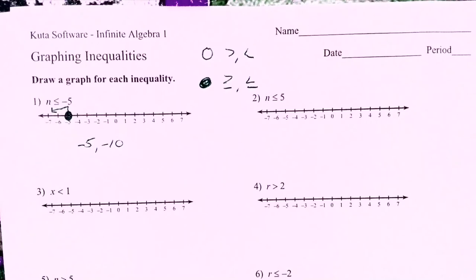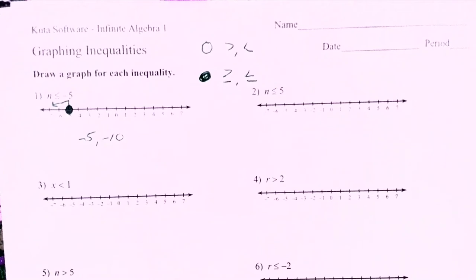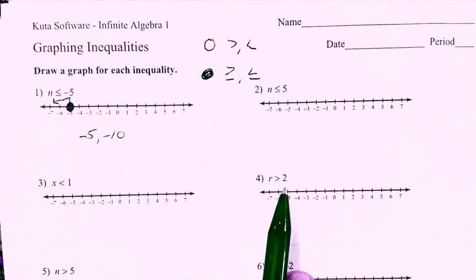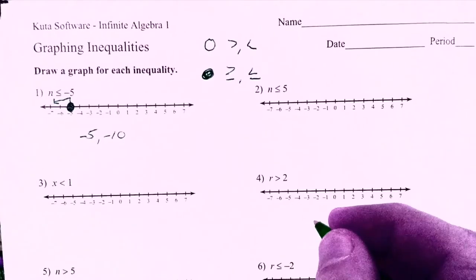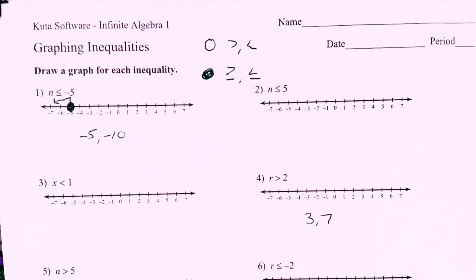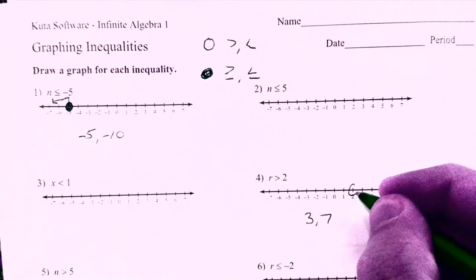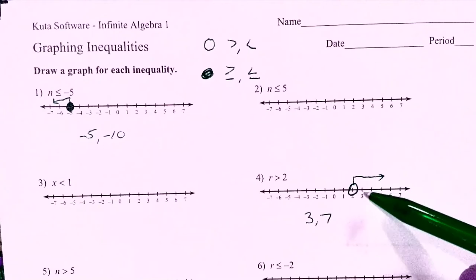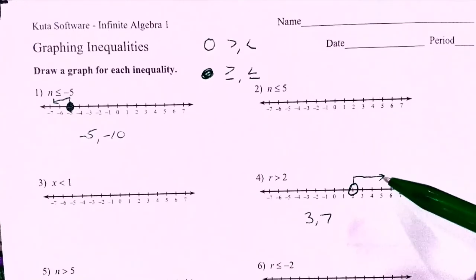Number four says r, some number, is greater than two. You could also read it as two is less than r. What are two solutions? Not two — two doesn't work because two is not greater than two, two is equal to two. So I could pick three and seven as two solutions. To graph: step one, go to two. Step two, hollow dot because it doesn't include two. Step three, go to the right because these are all numbers greater than two. Notice the line includes three, seven, ten — it just keeps going.